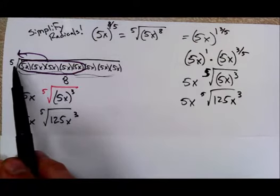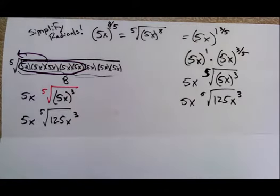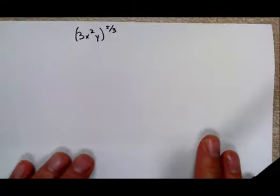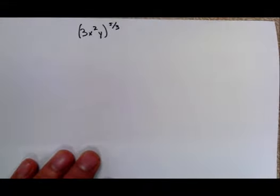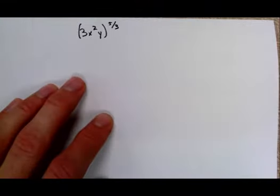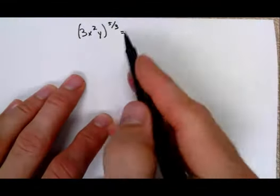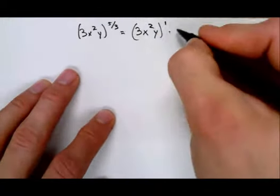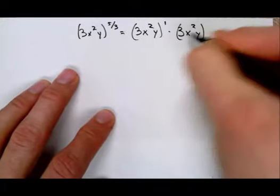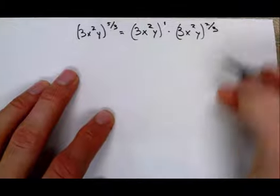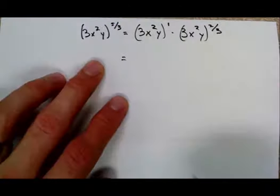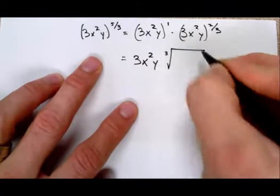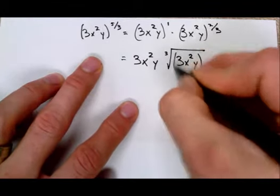As we get into a slightly more complicated example still, if you had 3x squared y all to the 5 thirds, then what you would want to do is you would want to think of this as an improper fraction as well. And so now write it as a mixed number, that'd be 3x squared y to the 1st times 3x squared y to the 2 thirds. So there's a 2 thirds up there. So, rewriting into a radical form, 3x squared y, and then the cubed root of 3x squared y quantity squared.